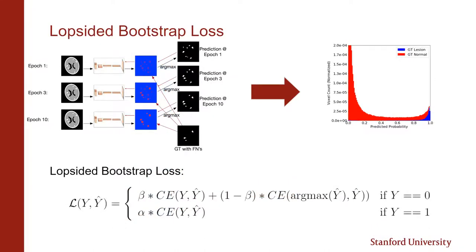To rectify the rise of prediction entropy, we create a feedback loop for our predicted probabilities. Because we can assume that there are only false negatives and not false positives, we can apply this loss only when the target annotation is negative. From the predicted probability histogram, we can qualitatively see that this revives our performance to some degree.